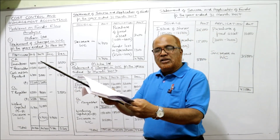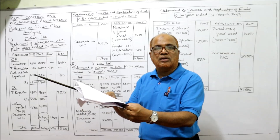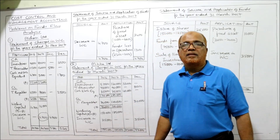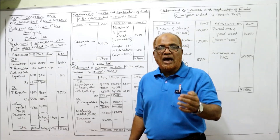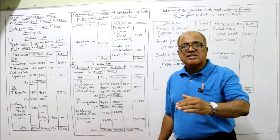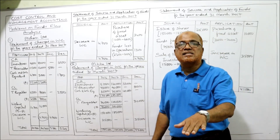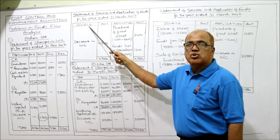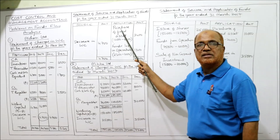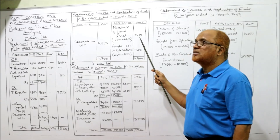Current liability already taken in working capital. Non-current assets: fixed assets, last year 6,600, current year 10,000 — correct the typing mistake, it is 10,000. Increase in fixed assets is due to purchase. When we purchase fixed assets, there is application of funds. So purchase of fixed assets: 10,000 minus 6,600 equals 3,400 — taken on the application side.